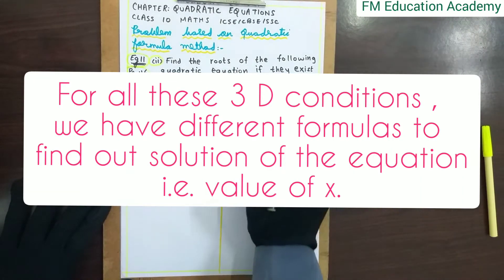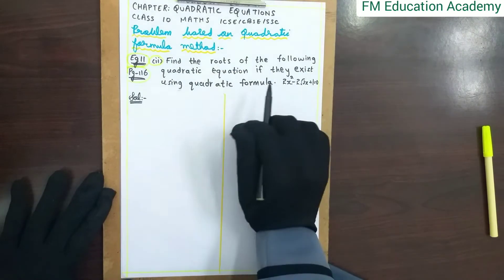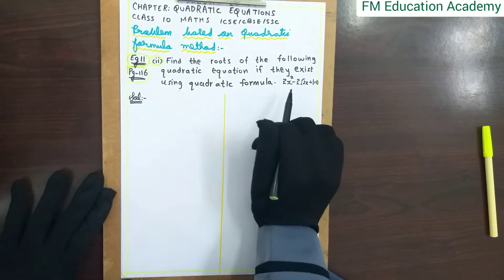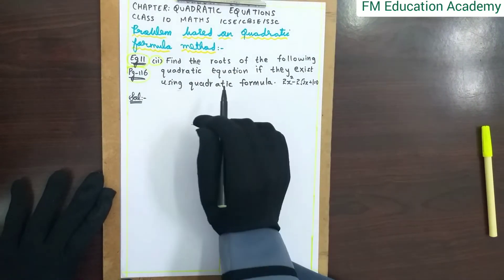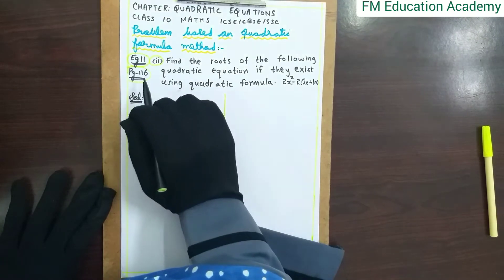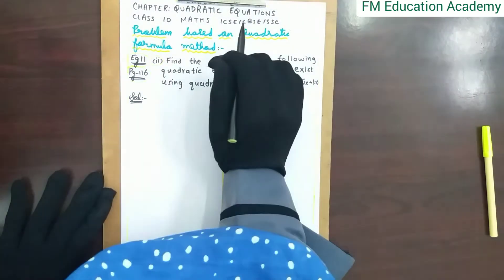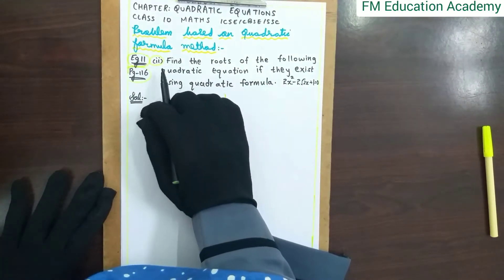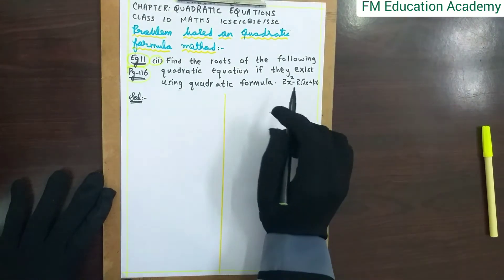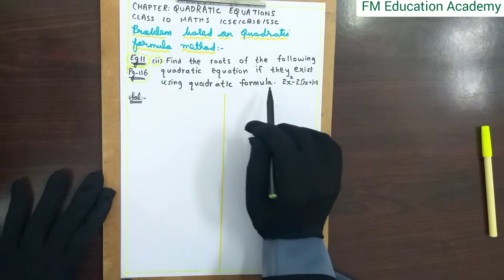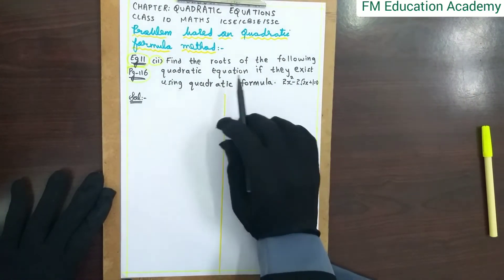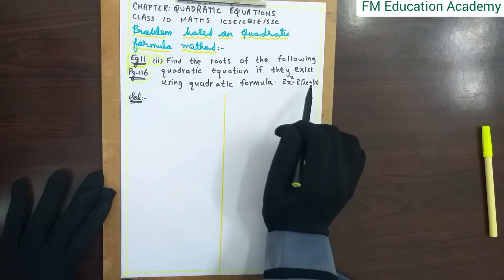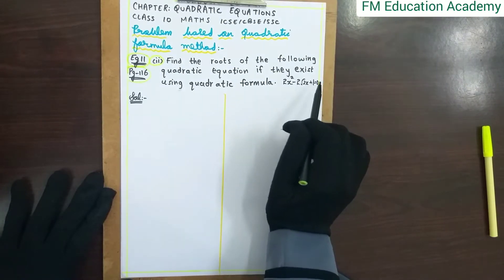The question is: find the roots of the following quadratic equation if they exist using the quadratic formula. This is taken from Example 11, page 116, of the chapter on quadratic equations. The quadratic equation given is 2x² − 2√2·x + 1 = 0.